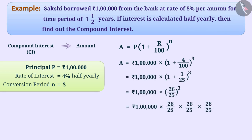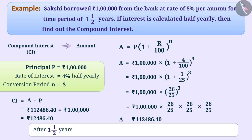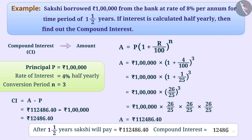Solving this, we get A = Rs. 1,12,486.40. Since CI = A − P, therefore CI = Rs. 1,12,486.40 − Rs. 1,00,000 = Rs. 12,486.40. This means after one and a half years, Sakshi will pay Rs. 1,12,486.40, in which the compound interest will be Rs. 12,486.40.